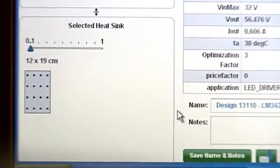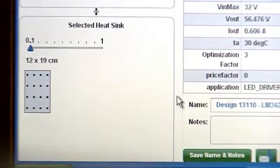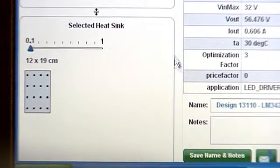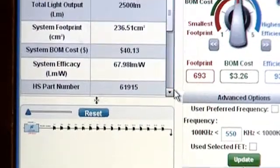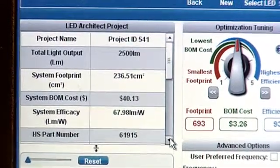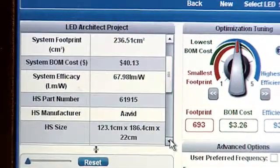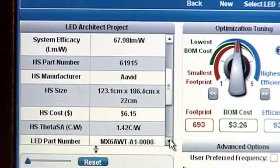This may be familiar to those of you who have used WebBench in the past, where you have the ability to do SPICE simulations, adjust BOM components, and further refine the circuit performance. But on the left side, we've added a panel here that shows you a top view of the LEDs on their heat sink, a block diagram of the drivers, and at the very top you see some system level parameters, such as system footprint, system BOM cost, system efficacy, and the heat sink information.